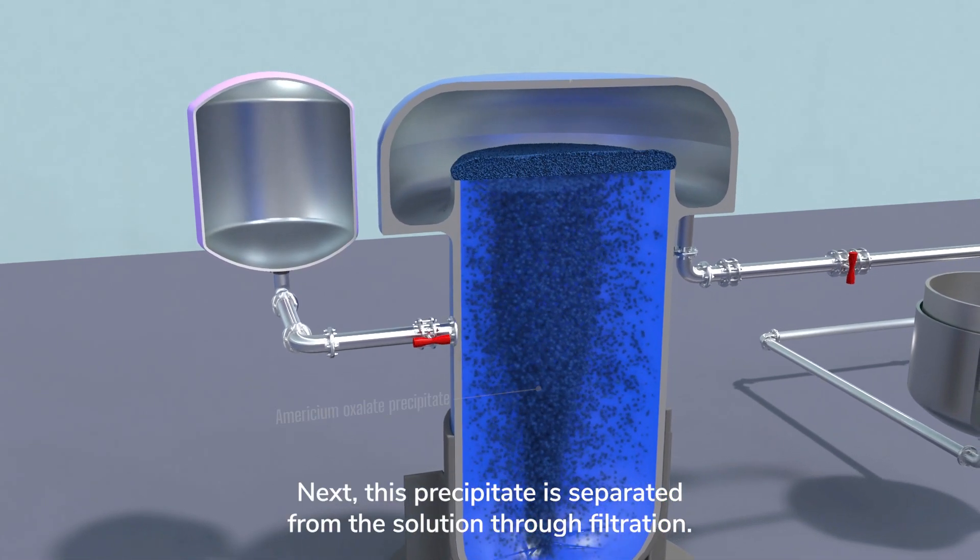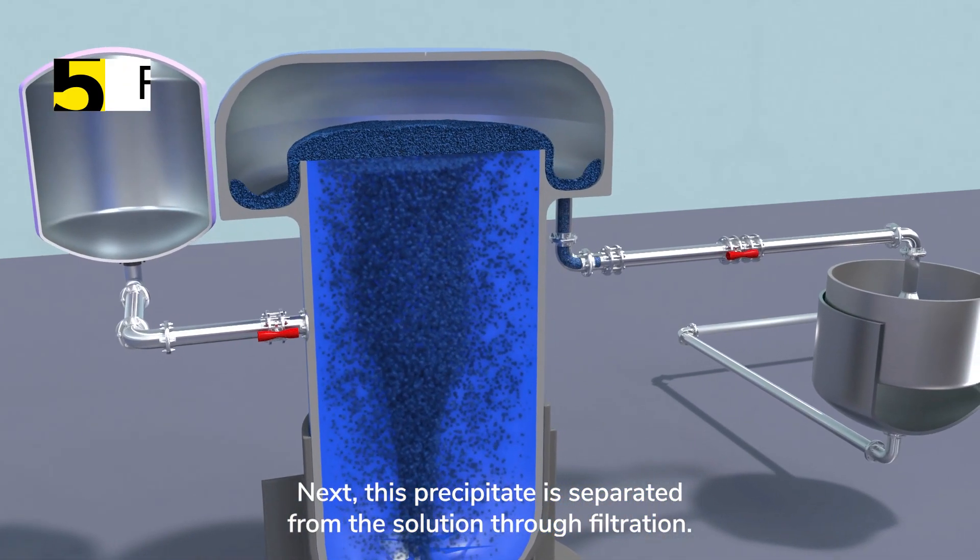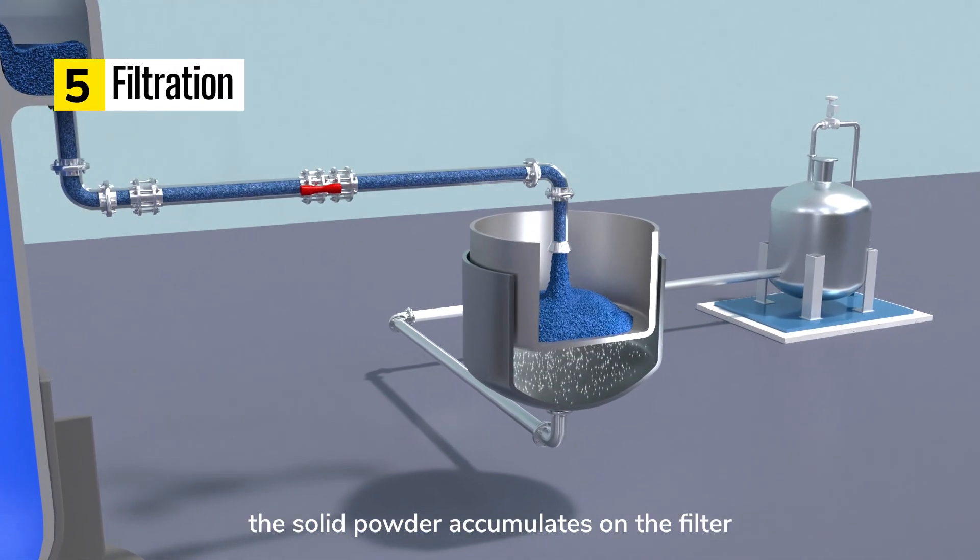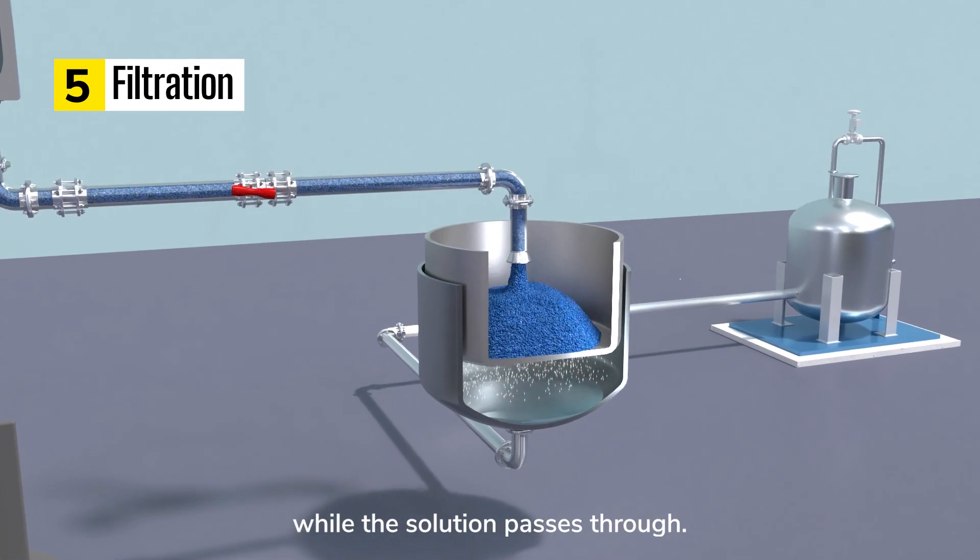Next, this precipitate is separated from the solution through filtration. During this second step, the solid powder accumulates on the filter while the solution passes through.